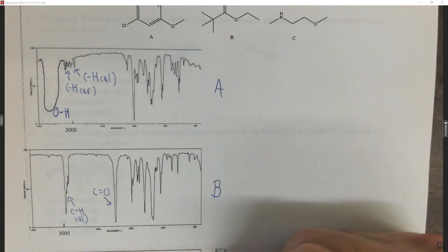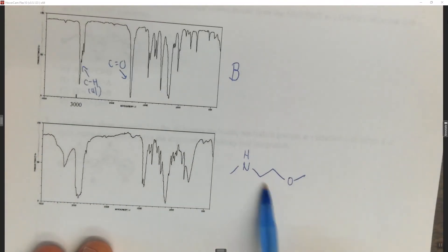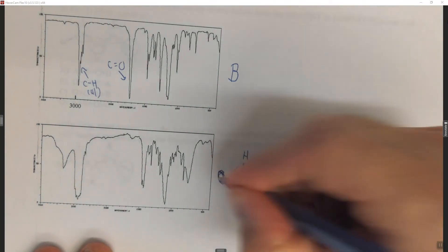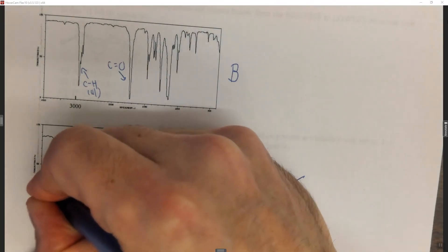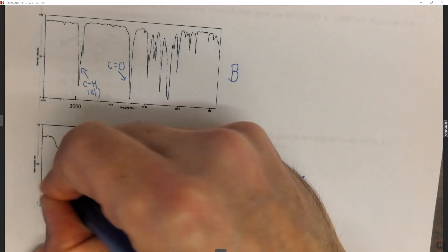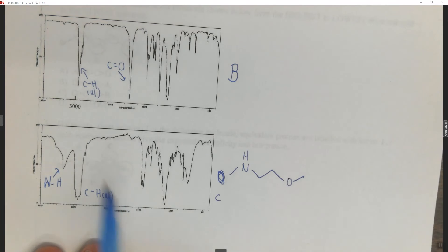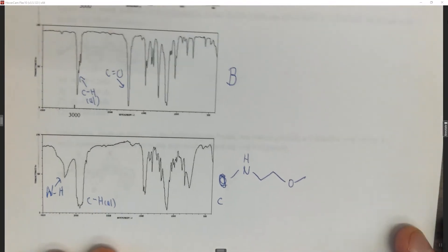For the last one, I'll rewrite the structure a bit lower so you can see it. This is the only one left and obviously has to be C by process of elimination. In this case we have an NH peak, a CH aliphatic peak, and no C=O. The presence of the NH and the CH aliphatic allows us to confirm this one is letter C.